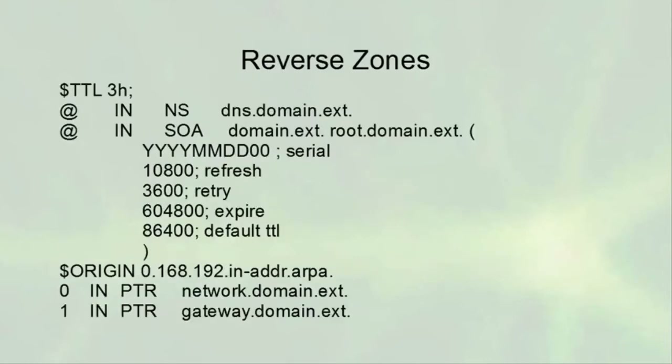You also have reverse zones. The top part looks the same. Using $ORIGIN to specify individual pieces, for the 192.168.0 range, you'd have a PTR (pointer) record: 192.168.0.0 in PTR network.domain.ext — telling you the name of that IP address when doing a reverse lookup.